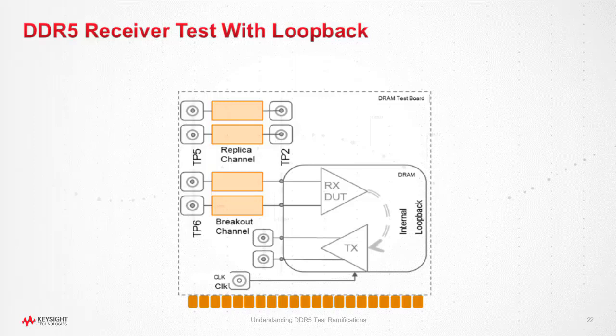The schematic here shows a block diagram of a DDR5 device test board. This includes a set of replica channels that provide the exact same characteristics as the breakout channels below. The purpose of the replica channel is to provide access to the calibration point for an oscilloscope. It is not 100% clear yet where this calibration point is, but typically it has been at the ball for earlier specifications, and we assume it's going to be the case for DDR5 also.